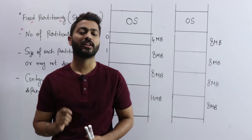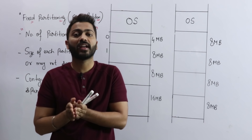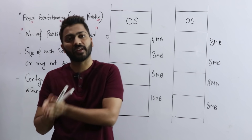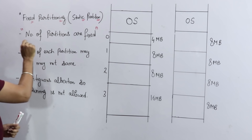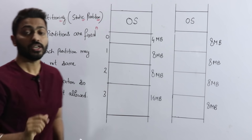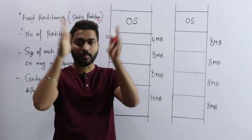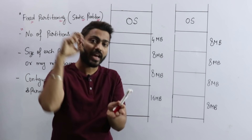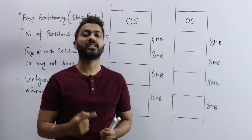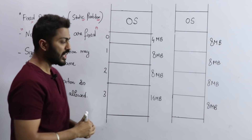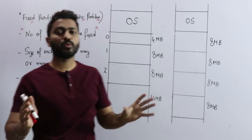Fixed partitioning, also known as static partitioning, is a method of contiguous memory allocation. Whenever processes come into RAM, we need to allocate space for them. In fixed partitioning, the key concept is that the number of partitions is fixed. This is a very important point — the RAM is divided so that processes can be placed in it.